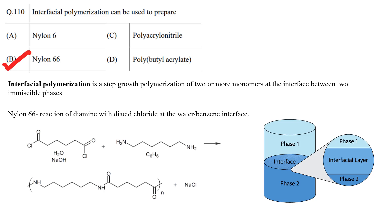So the correct answer is option B, Nylon-66. In the synthesis of Nylon-66, diamine is dissolved in benzene and diacid is dissolved in water. Both solvents do not mix with each other, and the polymer forms at the interface of these two liquids. Interfacial polymerization is also used to synthesize conducting polymers, amides, polyurethanes, and polyesters.